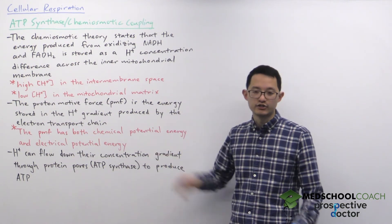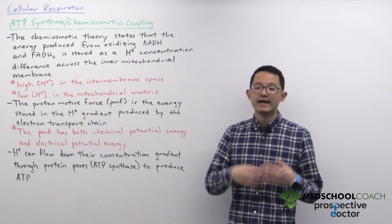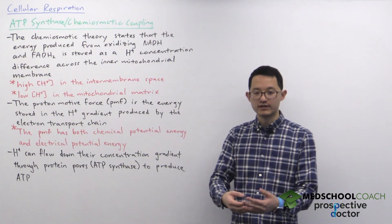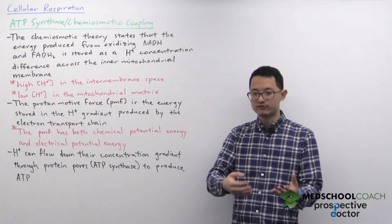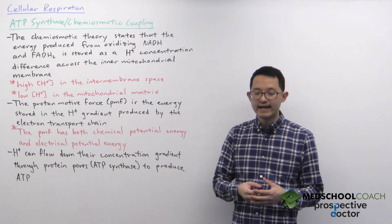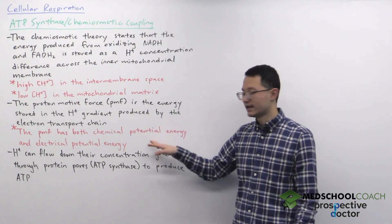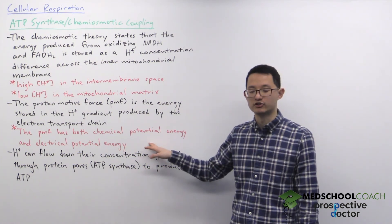The electrical potential energy is referring to the charge difference in the mitochondrial matrix and the intermembrane space. By pumping a bunch of positive charge in the intermembrane space, it makes the mitochondrial matrix negative and that will help to attract positive charges into the matrix, and that is also a form of potential energy.